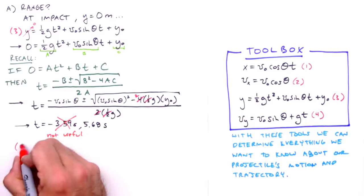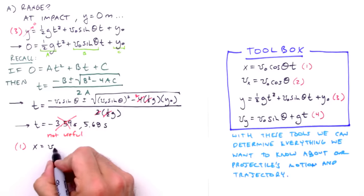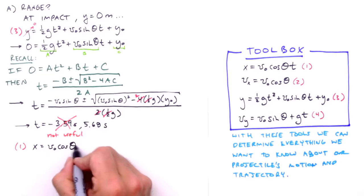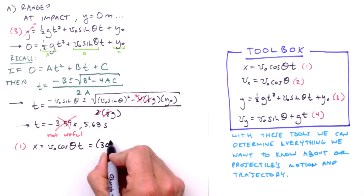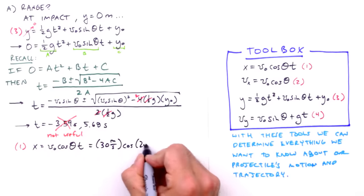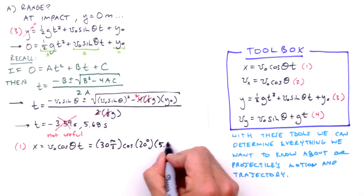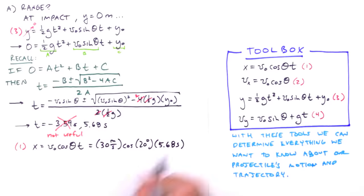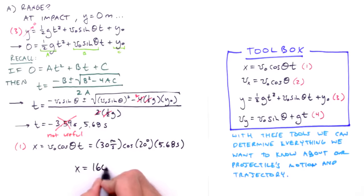Now we proceed with equation 1 and insert the appropriate values: 30 meters per second, cosine 20 degrees, and for time we use 5.68 seconds from equation 3. And we get a horizontal displacement of 160.1 meters — not an unreasonable range. Now let's determine the maximum vertical displacement of our projectile, that is the peak height of its trajectory.